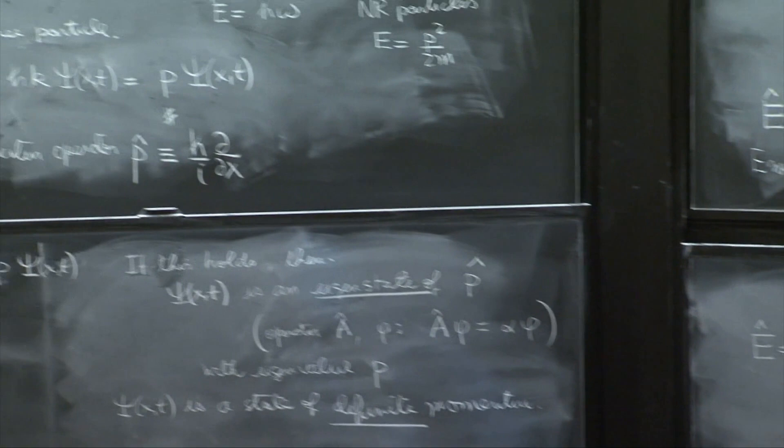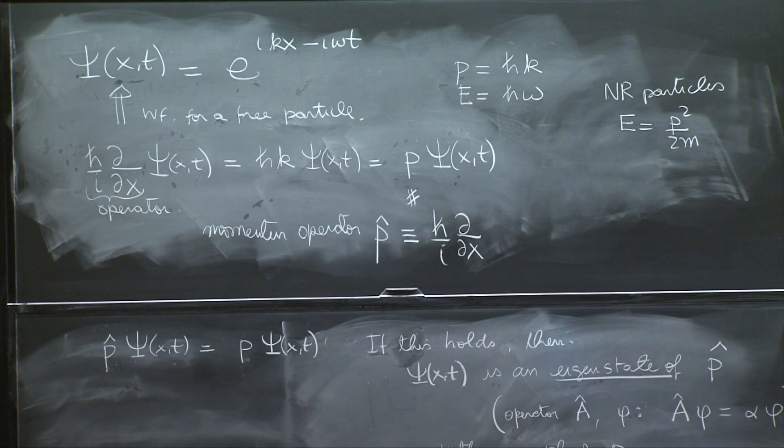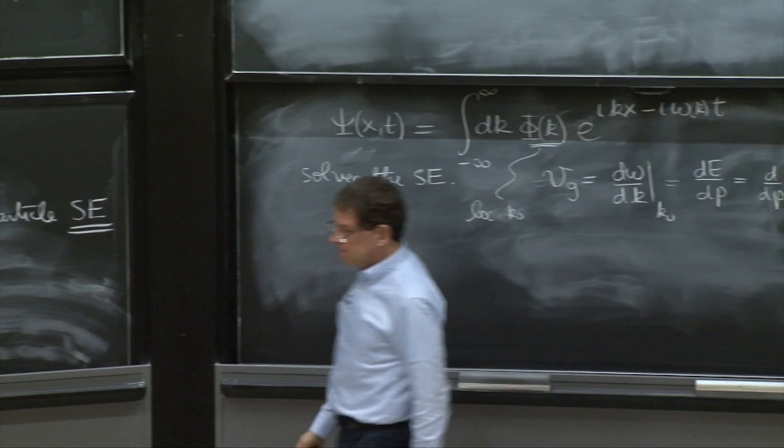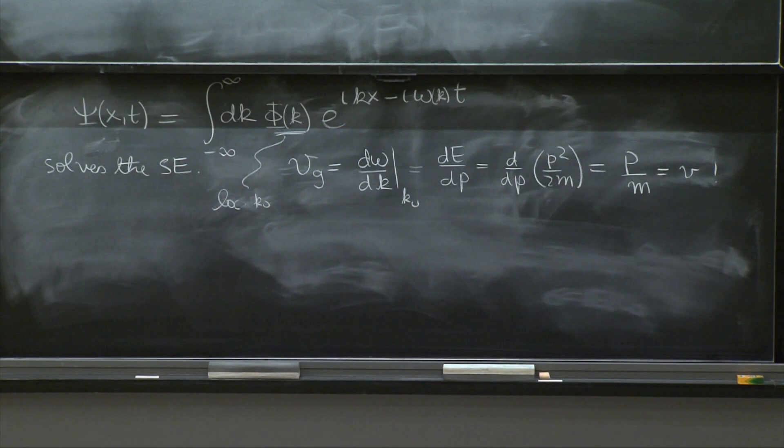And this is d dp of p squared over 2m, which is p over m, which is what we call the velocity of the particle. So it moves with the proper velocity, the group velocity. That's actually a very general solution.